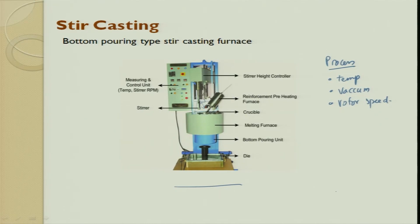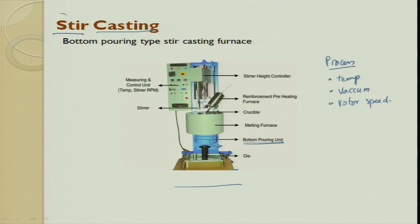This is a controlled process and you get the required output. Once everything is done, there is something called bottom pouring — the lid is opened and everything is collected at the bottom into a vessel and then used for the casting process. That is why it is called stir casting: you are stirring it and then finally casting it to get the required output.